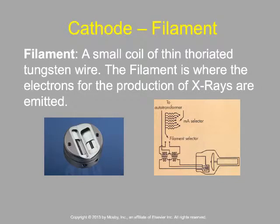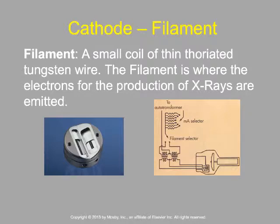Sometimes they talk about tungsten impregnated with thorium as part of what's inside the filament. Think of it primarily as tungsten wire. The big takeaway is that it has an extremely high melting point — 6,200 degrees Fahrenheit. Adding thorium can bump up the melting point a little bit and increase efficiency.